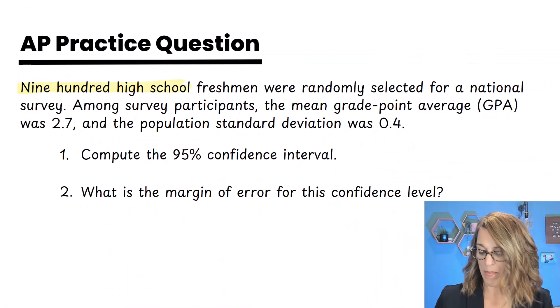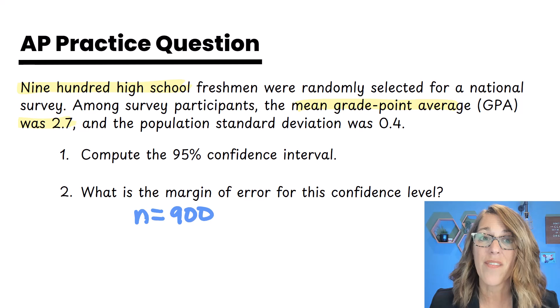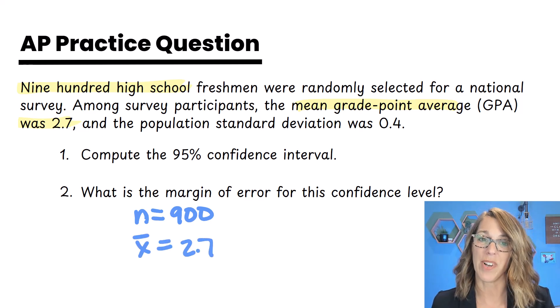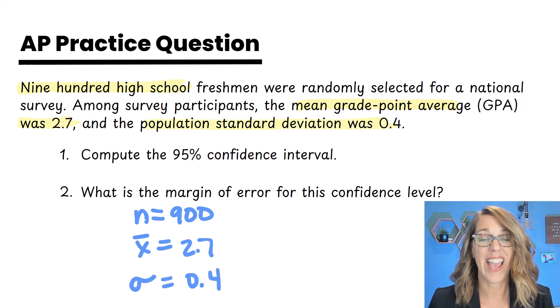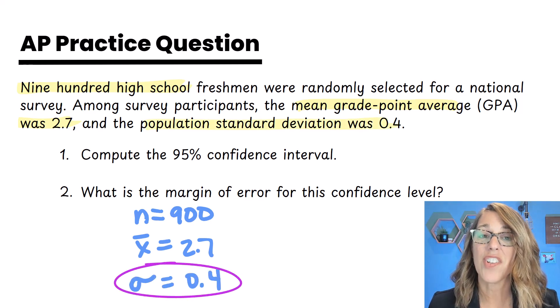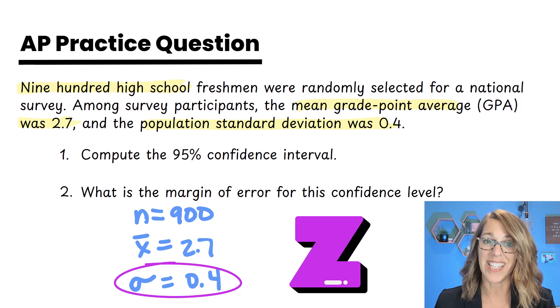900 is really big, so I've got that going for me. N is 900. We also have a sample mean here of 2.7, and we're given the population standard deviation. Having that population standard deviation means that we can use our Z interval.